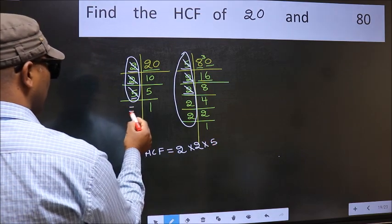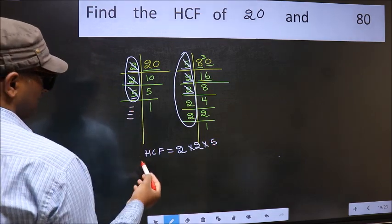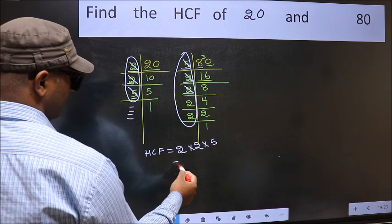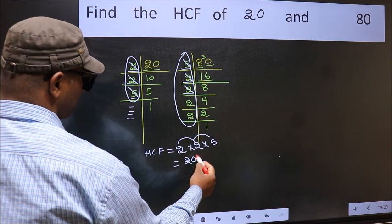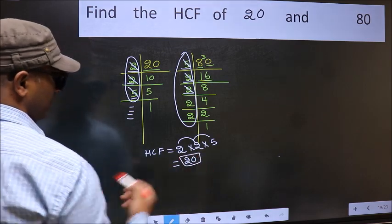So cut 5 right here. No more numbers have been left out. So our HCF is 2 times 2 is 4, times 5 is 20. 20 is our HCF.